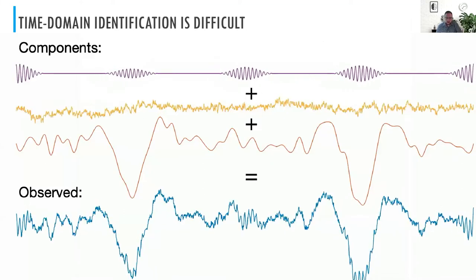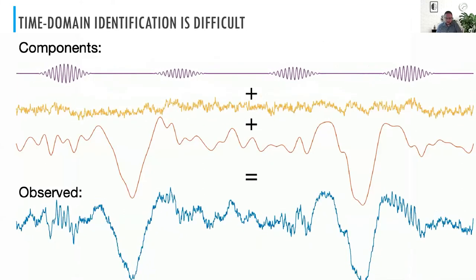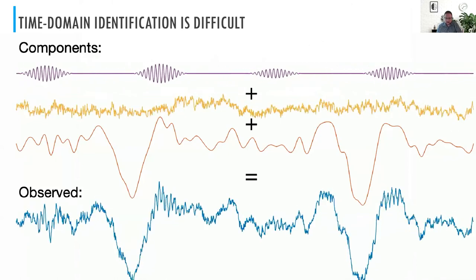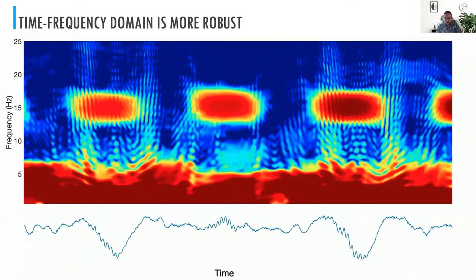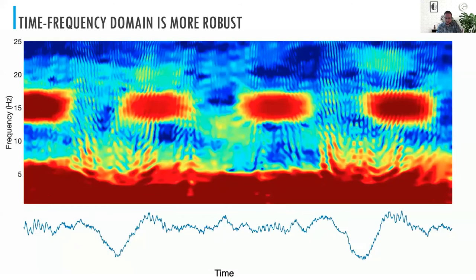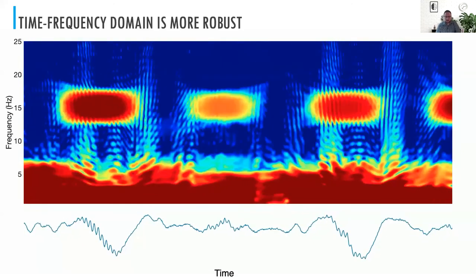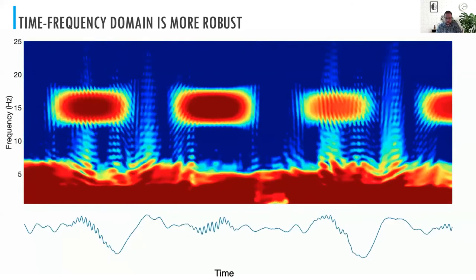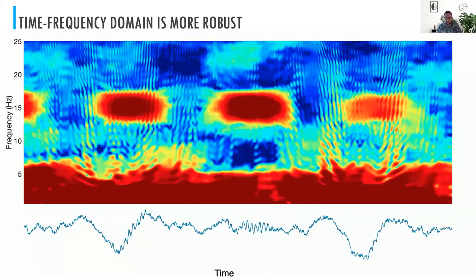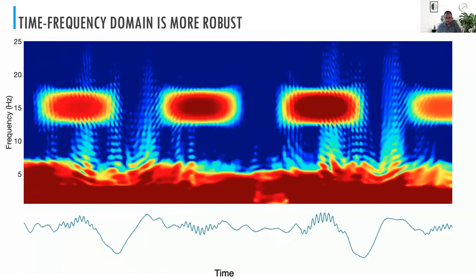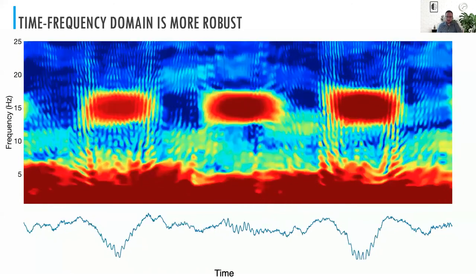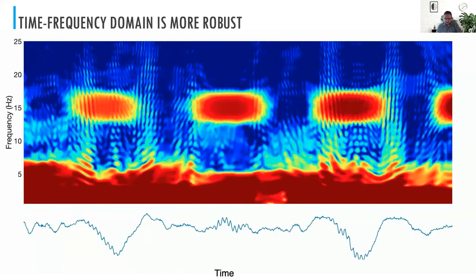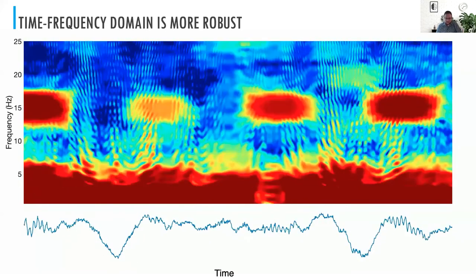By taking something like this in the time domain and making it into the time-frequency domain, we get spindles appearing as these blobs — which we'll call time-frequency peaks — in the spectrogram. What you can see is that no matter where they go, and even in the presence of some pretty strong noise, these time-frequency peaks are very robustly visible. So maybe we should use this as the basis of inquiry.